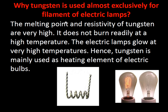Why is tungsten used almost exclusively for the filament of electric lamps? Tungsten is the most widely used material in incandescent and CFL bulbs because its melting point and resistivity are very high — it does not burn or melt easily even at very high temperatures. Electric lamps glow at very high temperatures, and tungsten can withstand this, making it ideal as the heating element.